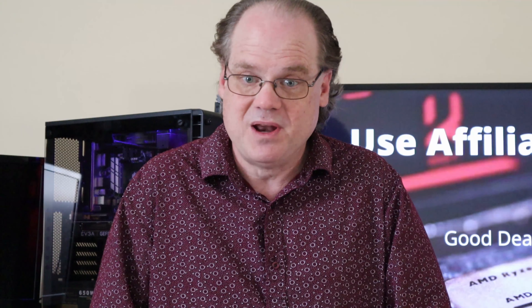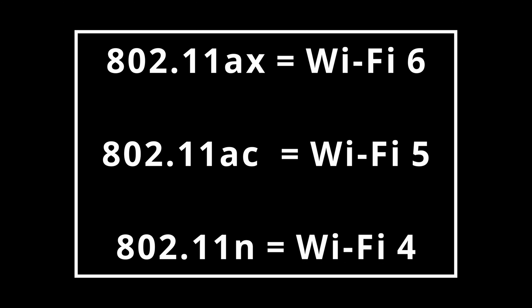Wi-Fi is that internet signal that is transmitted through the air in your house and shopping centers. Wi-Fi 6 is the latest and fastest Wi-Fi technology. To know if a device can use Wi-Fi 6, look for AX or 802.11ax. Wi-Fi 5 is AC, so you may see 802.11ac. Wi-Fi 4 is 802.11n, as in Nancy.